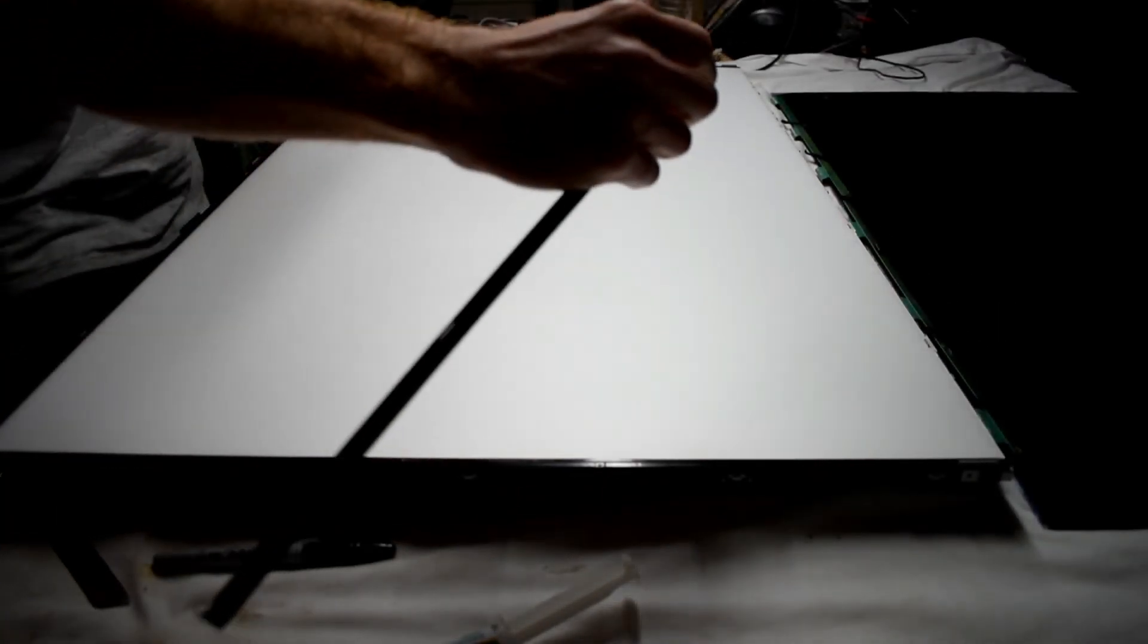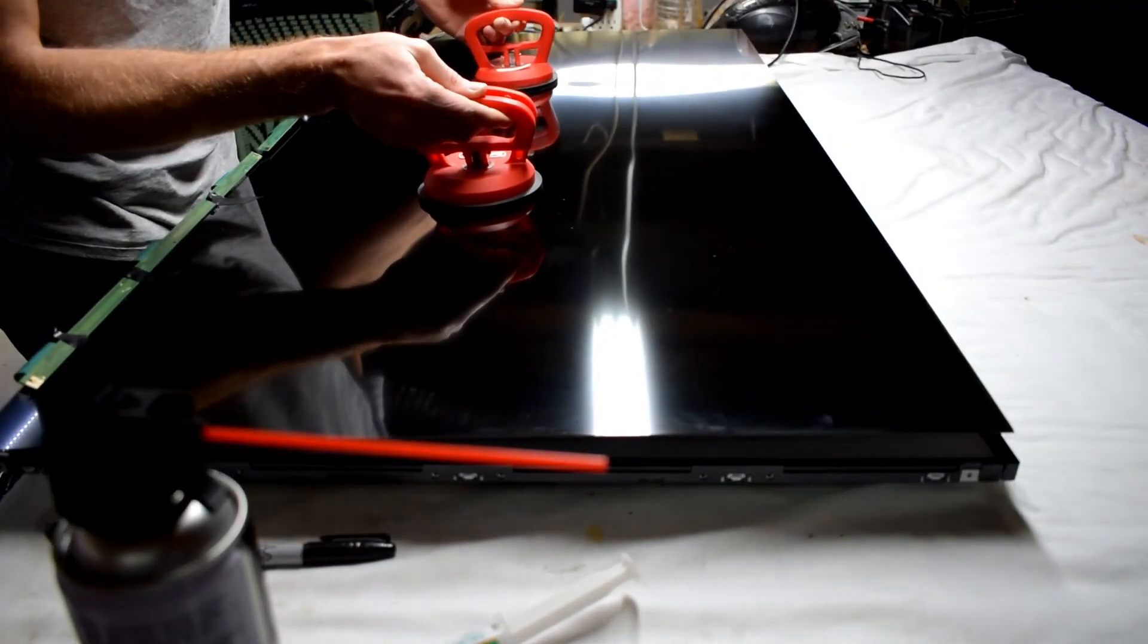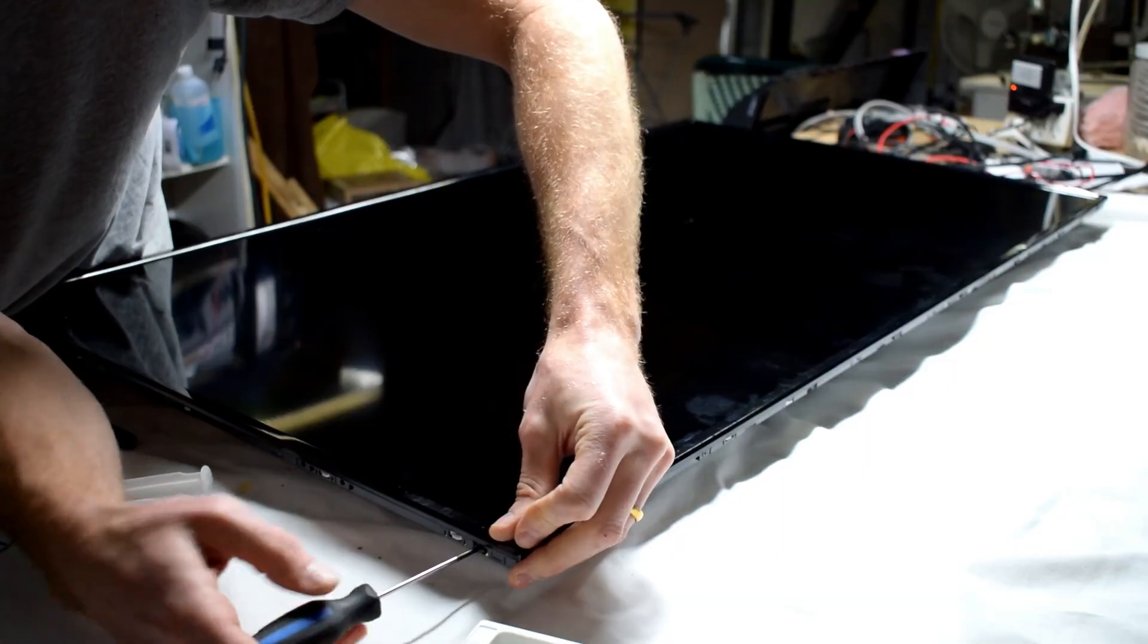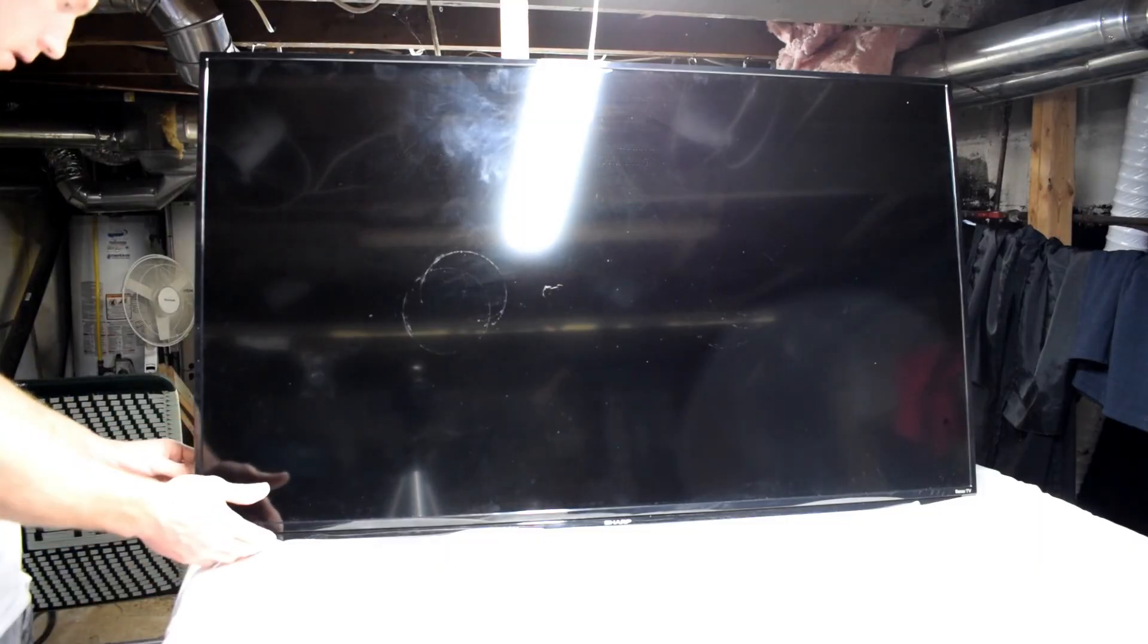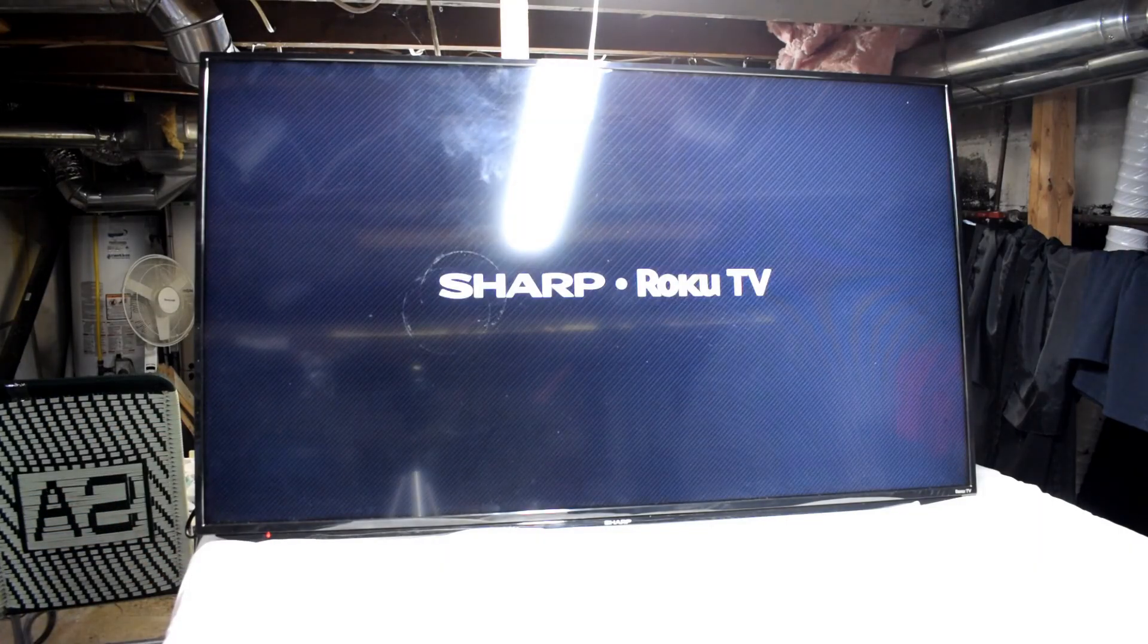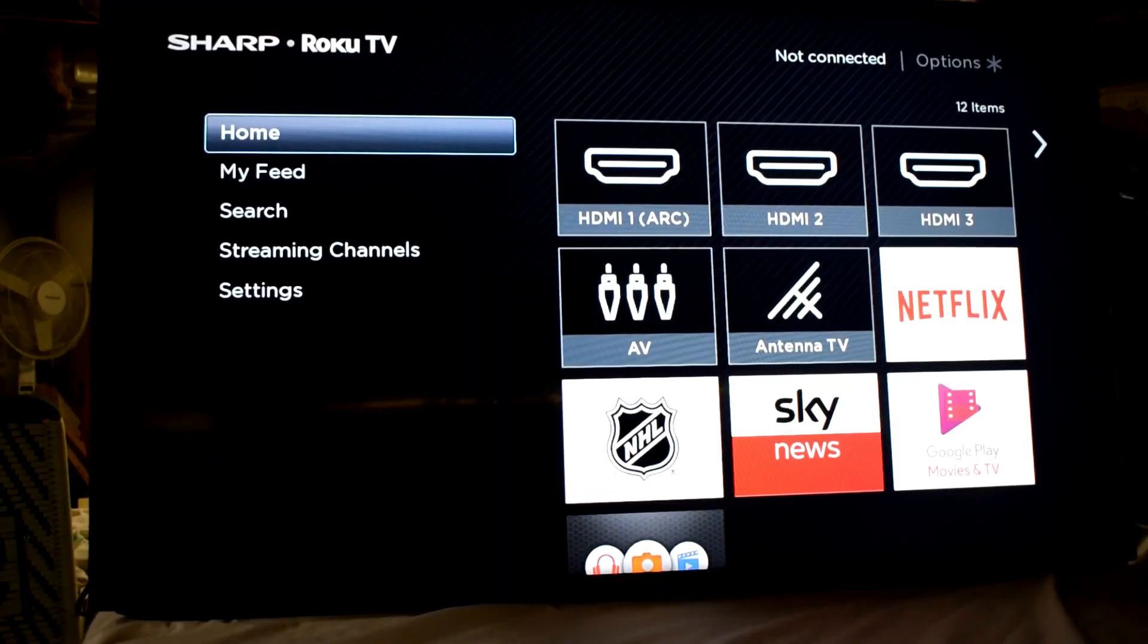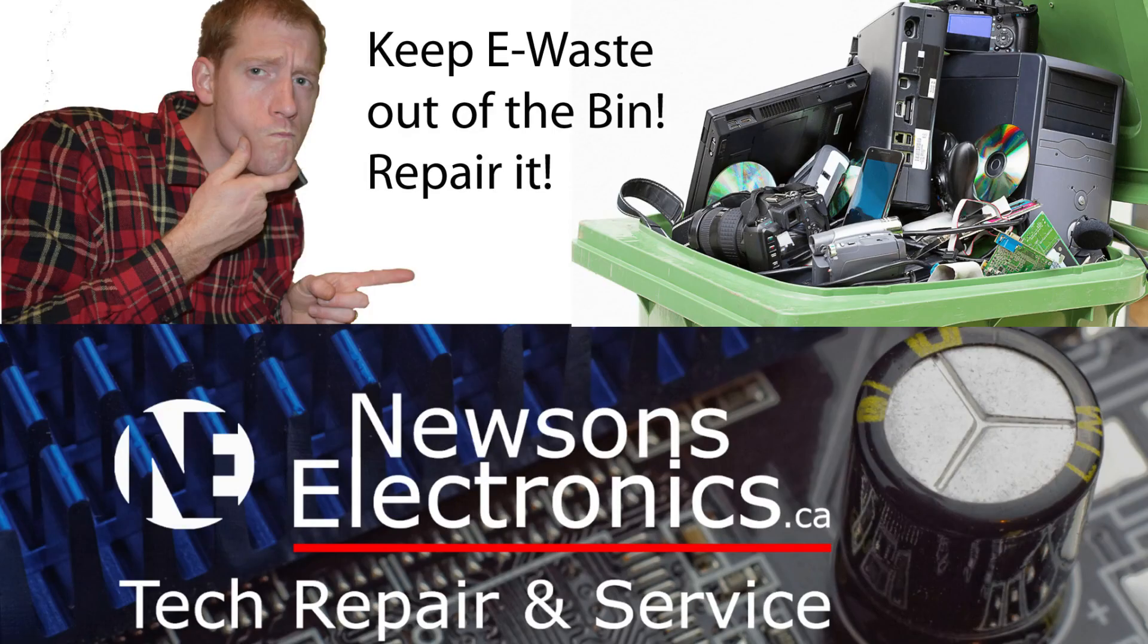Now we just have to reassemble the TV, putting everything back the way that we took it off. I'm powering on the TV and there you go, Sharp Aquos TV. Everything's working. I hope this helps. If you like it, subscribe and give a thumbs up.